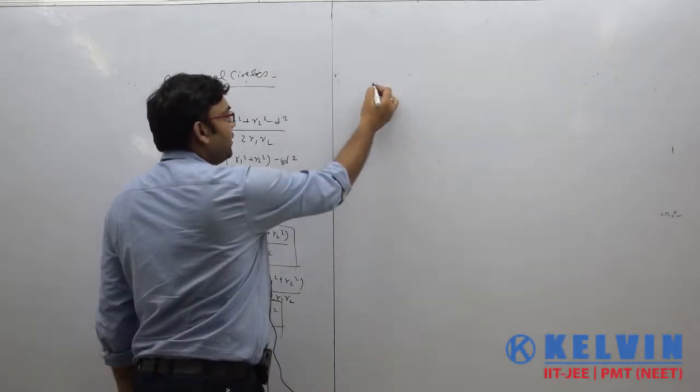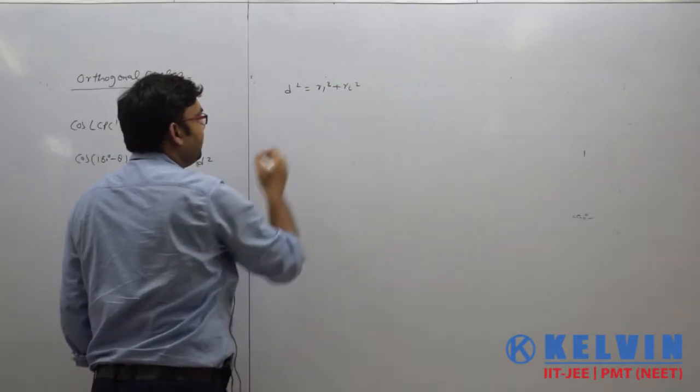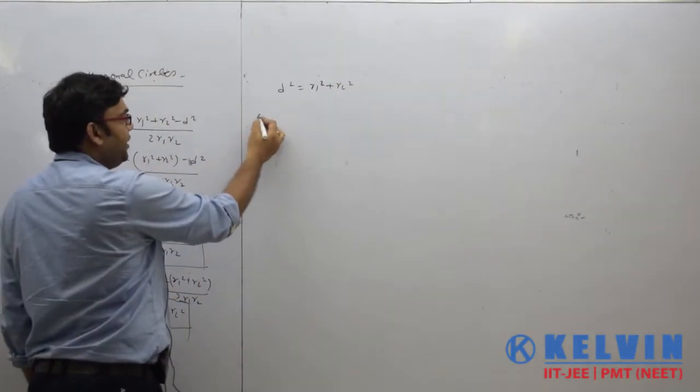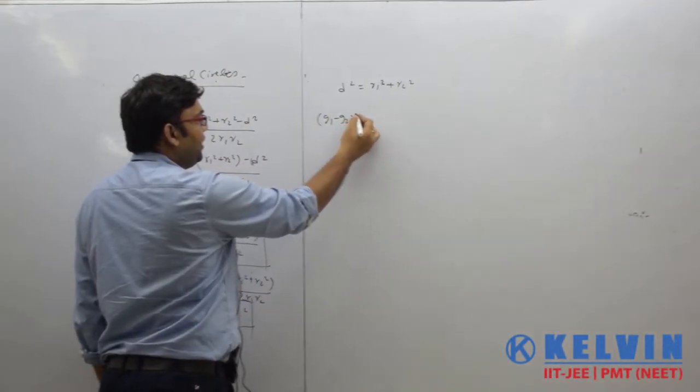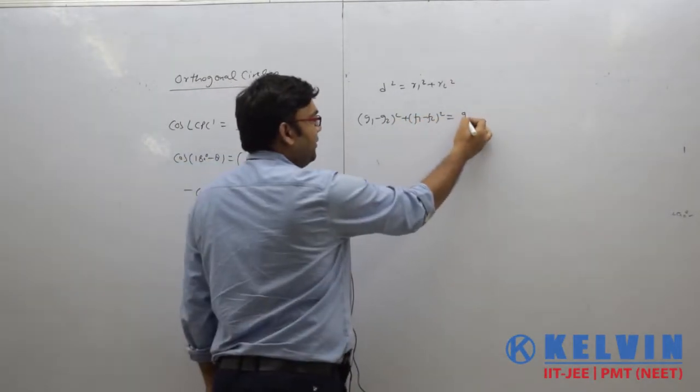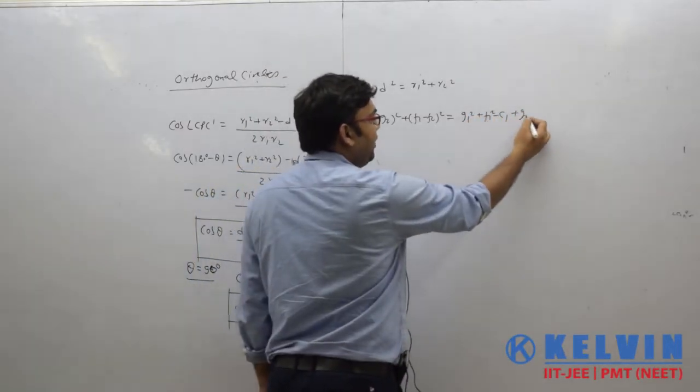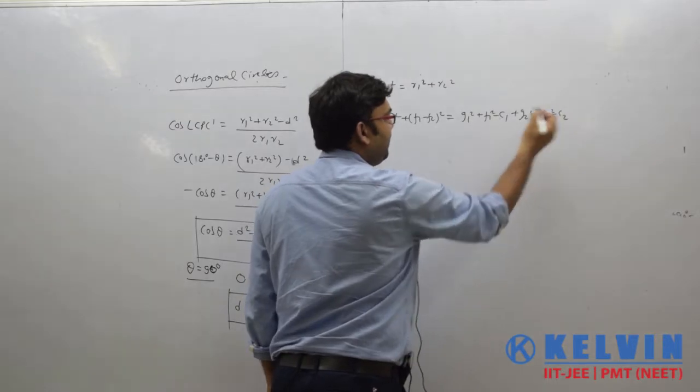d² is equal to r₁² plus r₂², where d is the distance between the centers of the circles. And what is r₁²? g₁² plus f₁² minus c₁. And what is r₂²? g₂² plus f₂² minus c₂.